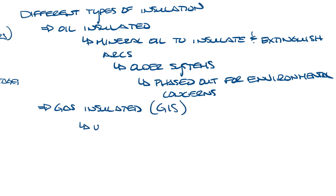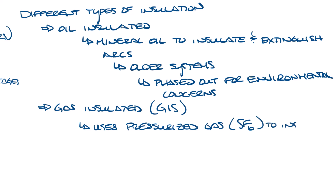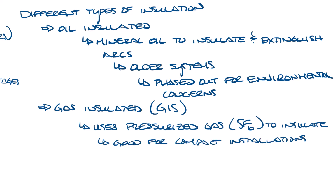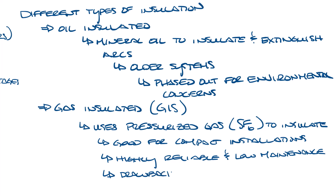Then you have gas insulated switchgear, GIS. This uses pressurized gas — usually sulfur hexafluoride, SF6 — to insulate conductors and contacts. It's good for compact installations like urban substations or data centers where space is limited. It's highly reliable and requires minimal maintenance. A major drawback of GIS is its potential greenhouse gas properties — it has a global warming potential of 24,300 — so researchers are looking at alternative gases.